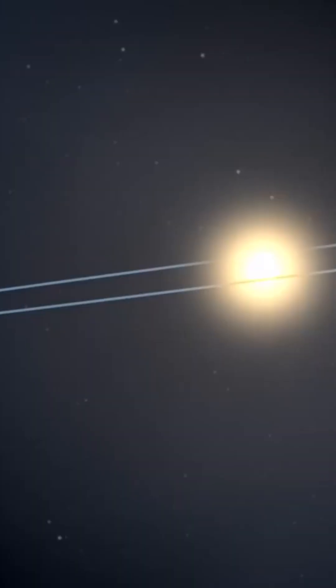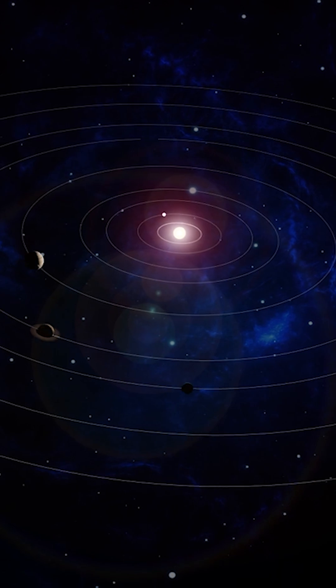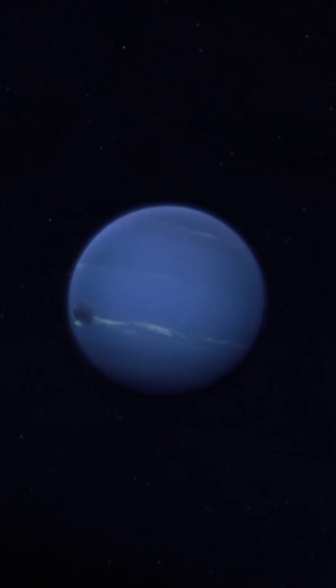When we hear the words solar system, most of us immediately picture that familiar lineup of planets orbiting neatly around the sun, from Mercury all the way out to Neptune. It might seem like there's nothing else past that point.